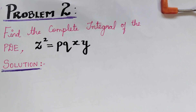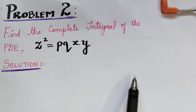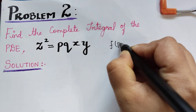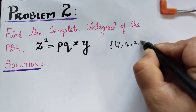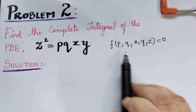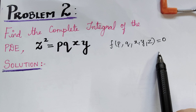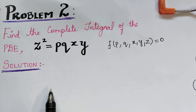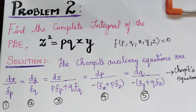Dear students, we are solving problems under the topic nonlinear partial differential equations. Here we are going to find the complete integral of the given PDE by using Chapit's method. First of all we shall write the auxiliary equations of Chapit's method. Any equation of the form f(p, q, x, y, z) = 0 is solved by using Chapit's method. The auxiliary equations are given by Chapit's equation.